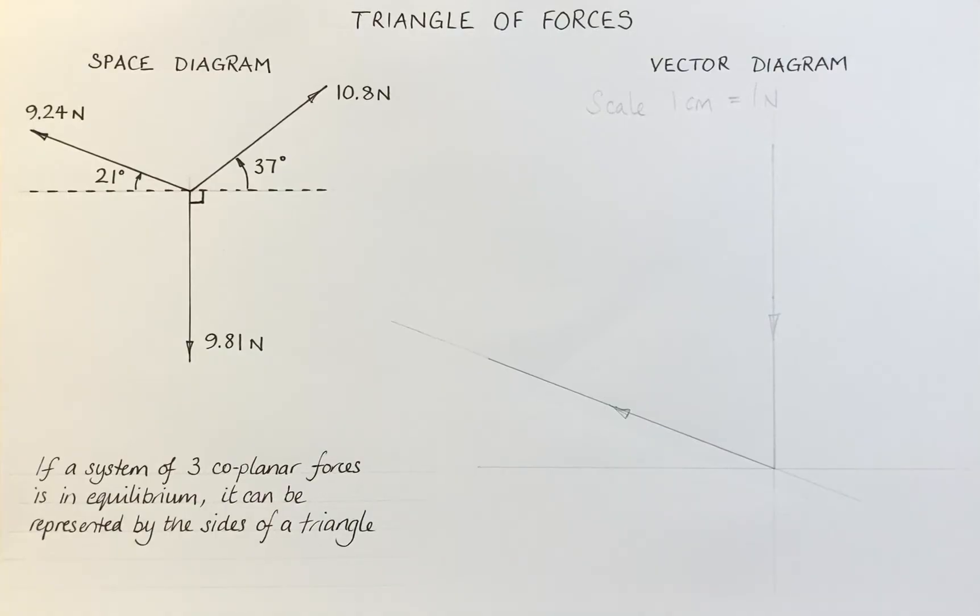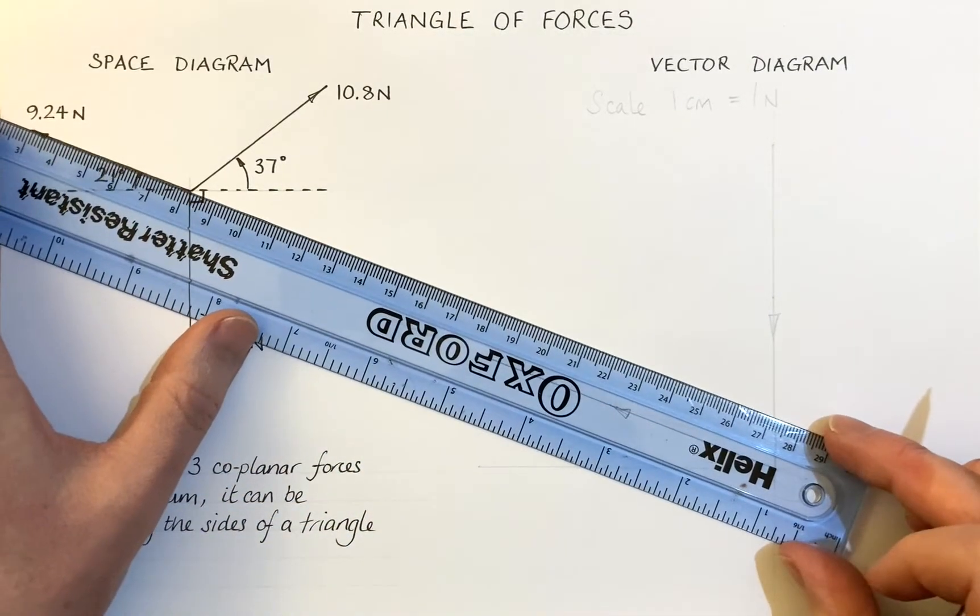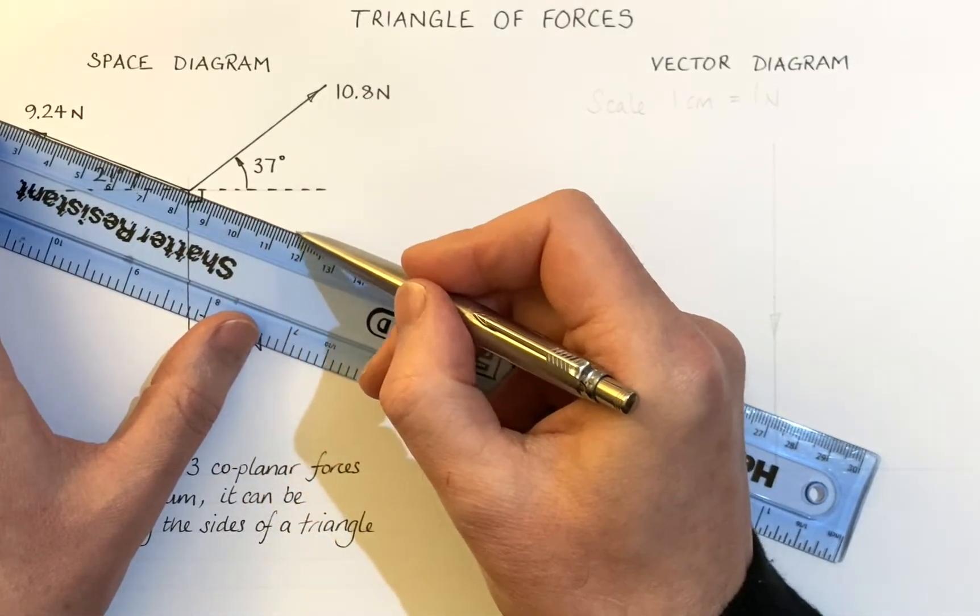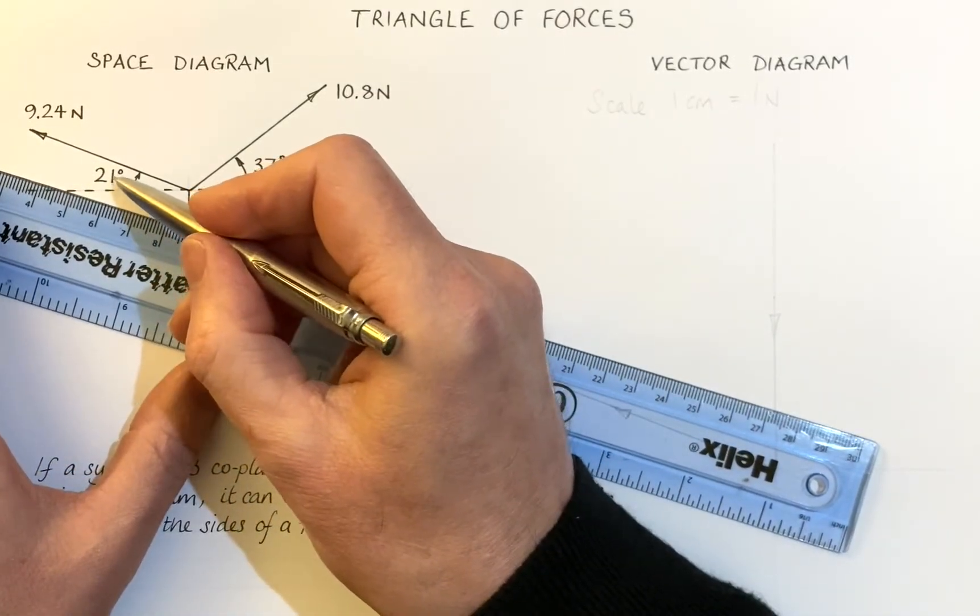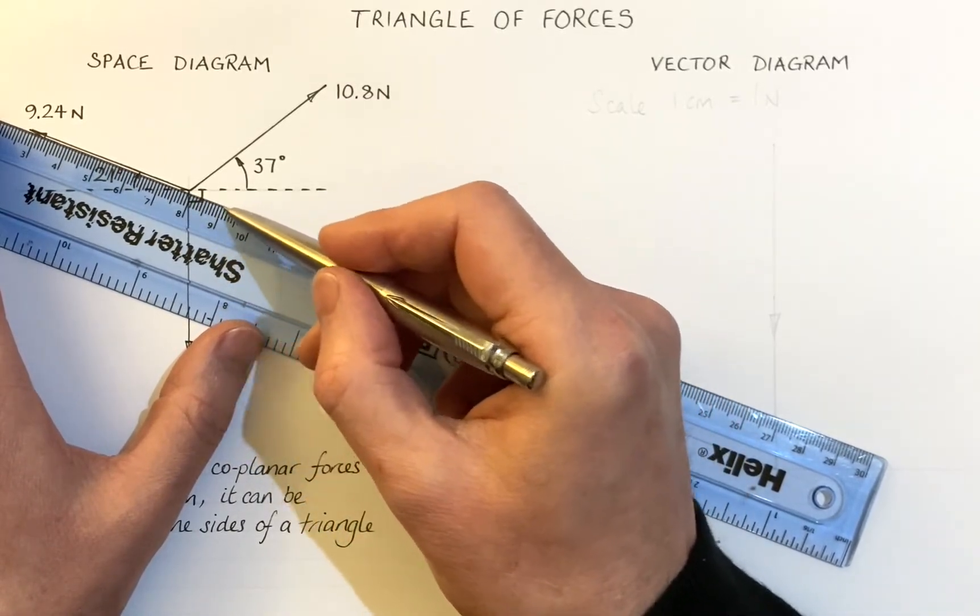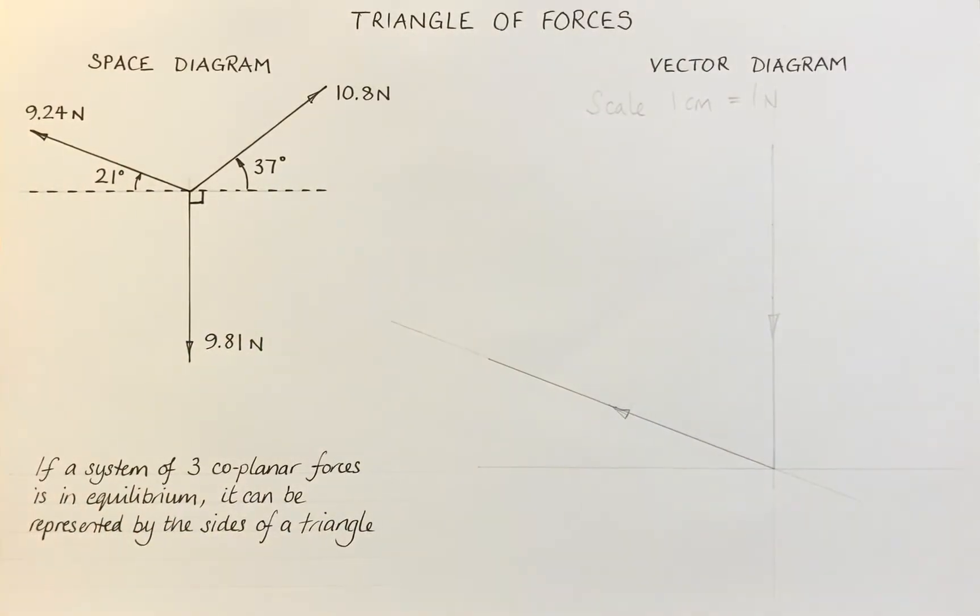Now, if I place a ruler on here, that angle down here is going to be the same as this angle here. So if that's 21 degrees, I know the total here is going to be 58 degrees.